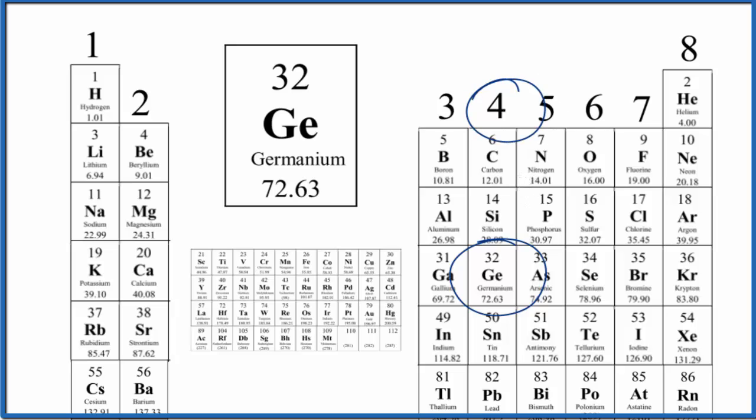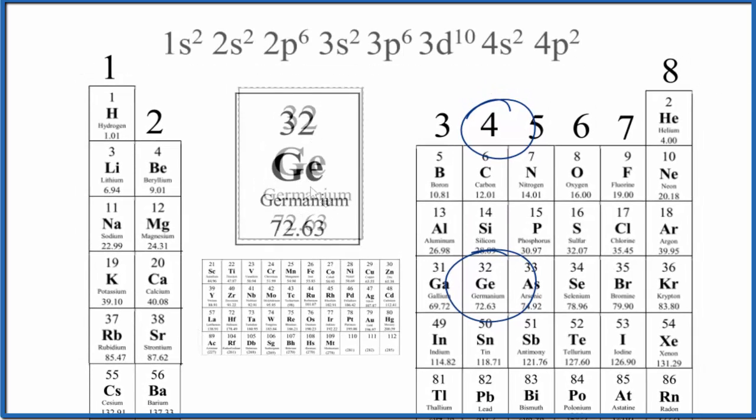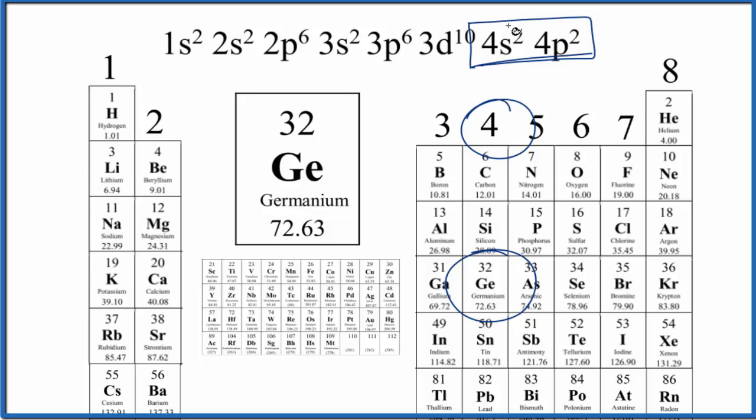You could also look at the electron configuration for germanium. And you'd see that in our fourth energy level, we have 4s2 and then 4p2. In the fourth energy level, we have 2 plus 2, that gives us four valence electrons for germanium.